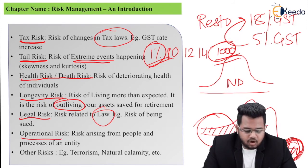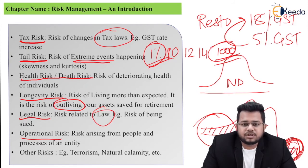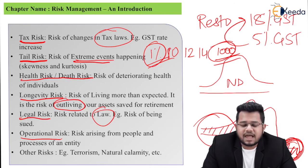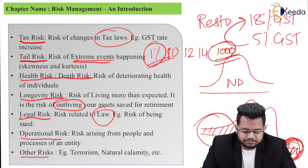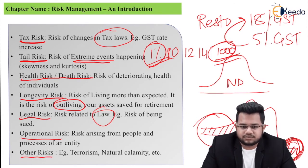O stands for operational risk — the risk arising from people and processes of an entity. Basically, because of your employees some operational hazard occurs, and that is known as operational risk. Other risks under this category include terrorism, natural calamities, earthquakes, fire, etc.